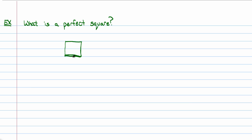A lot of people think that if something is somewhat elongated — if something is like a rectangle — that this is not a perfect square. That is actually not even a square; that's just a rectangle. But a square is this object right here, and a lot of people consider that to be perfect as far as squares go. In mathematics, a perfect square is a number that is the product of two numbers that are the same.